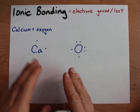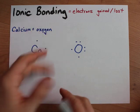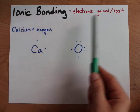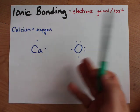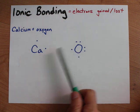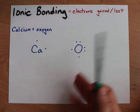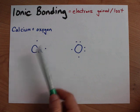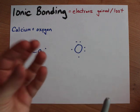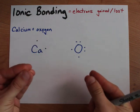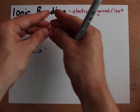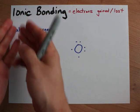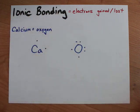Hey, what's up guys? We're going to illustrate ionic bonding with Lewis structures today. Ionic bonding is when electrons are gained and lost. One atom is going to gain electrons to get a negative charge, and one atom is going to lose electrons to get a positive charge. It's the fact that one of them is plus and one of them is minus that holds them together in a bond. Because they're charged, they're ions, so it's called ionic bonding.